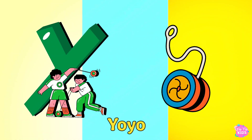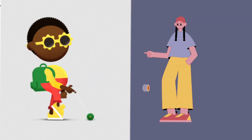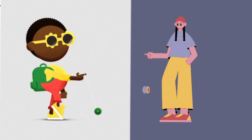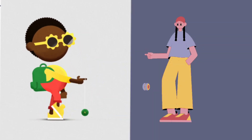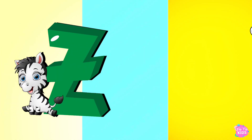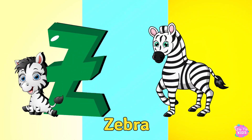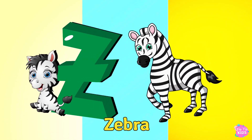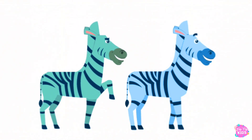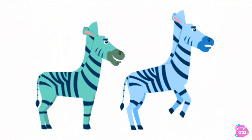Y is for Yo-Yo. Y, Yo-Yo, Y. Yo-Yo, Y. Yo-Yo. Z is for Zebra. Z, Zebra, Z. Zebra, Z. Zebra, Z. Zebra.